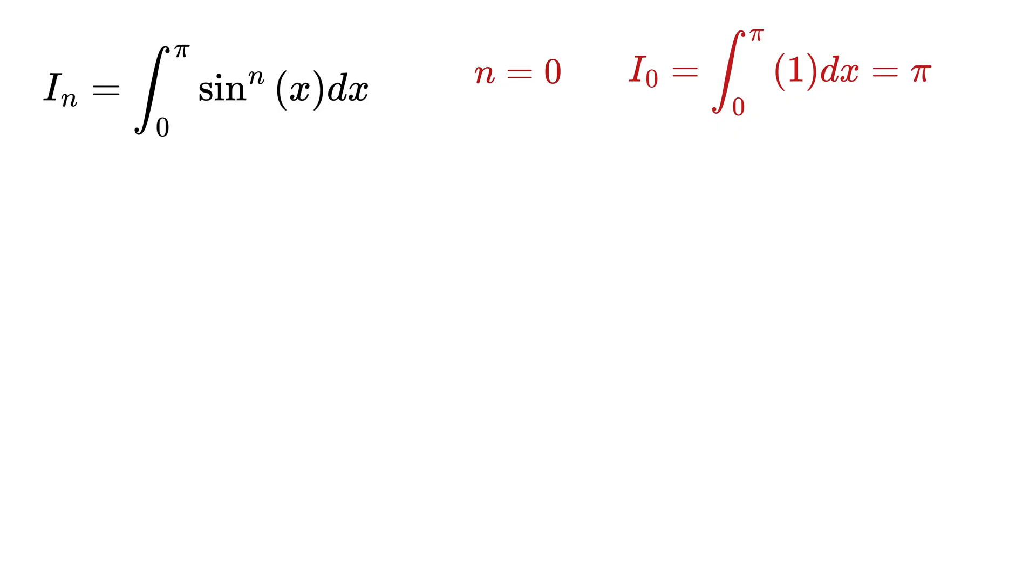For example, if n is 0, then the curve is just a flat line at 1 and the integral value is simply pi. If n is 1, then the curve is sine of x and the area comes out to be 2. These will be our starting points.